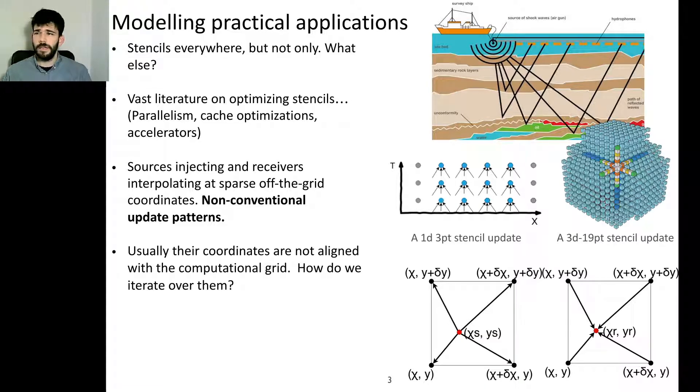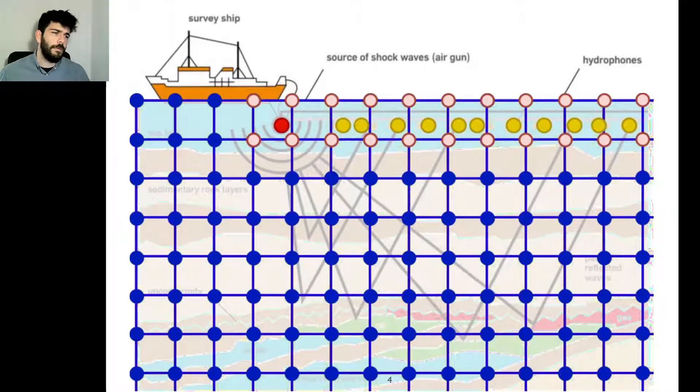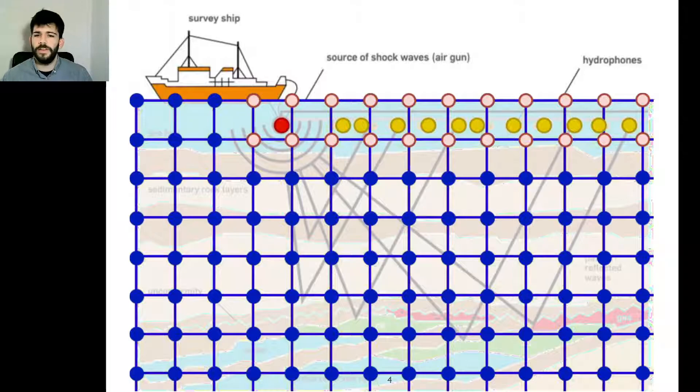Over the past there has been a lot of effort on how to optimize stencils regarding parallelism, cache optimizations, and accelerators. However, what is differentiating us from typical stencils is the sources and receivers that are not aligned to the grid points and these non-conventional update patterns emerge. How do we iterate through these points is usually through different iteration space than the ones we use for our grid points.